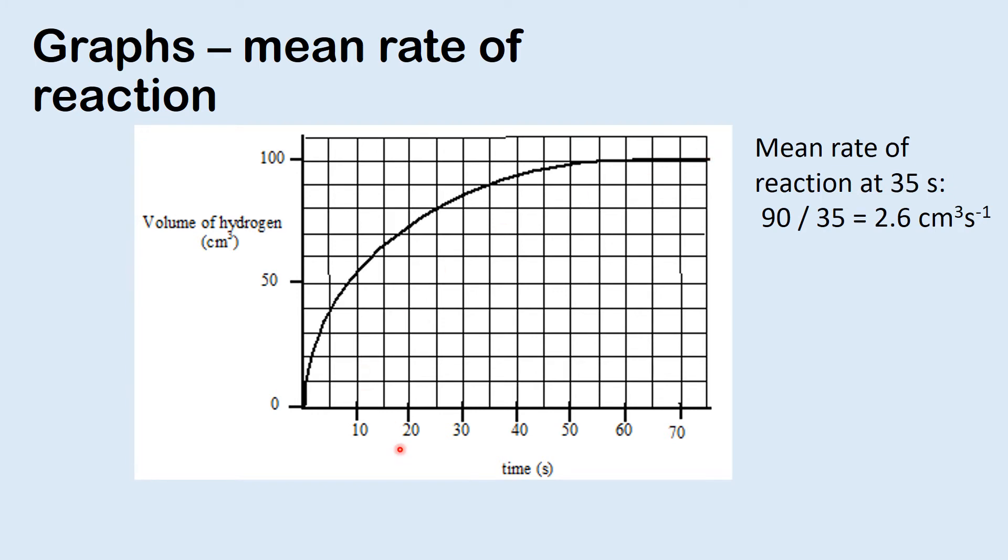If you were looking at an average rate of reaction you could pick something like 35 seconds. If you look at 35 seconds you can see that the volume of hydrogen produced at that point is 90 centimeters cubed. So it was 90 centimeters cubed in 35 seconds. The rate would be 90, so the quantity divided by 35, which would give 2.6 centimeters cubed per second. That would be the average rate at that point.